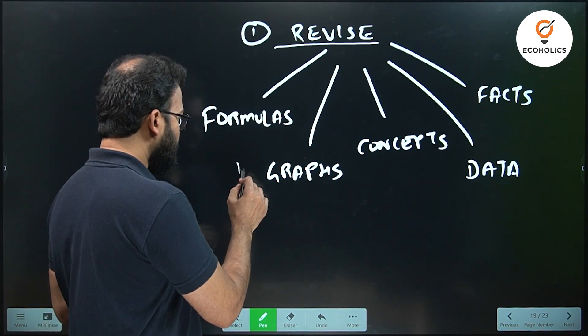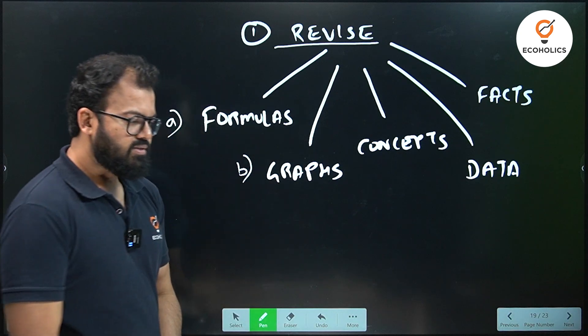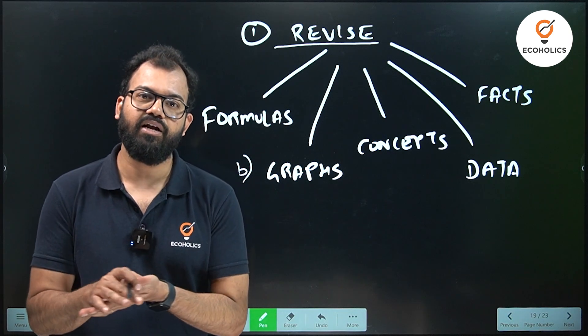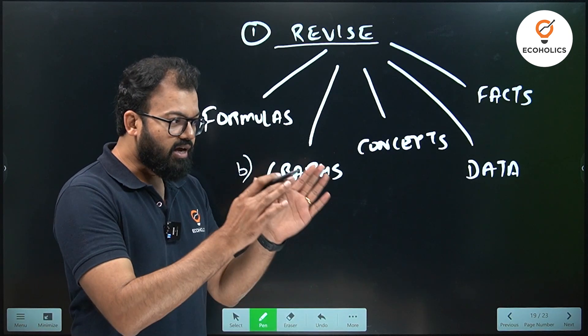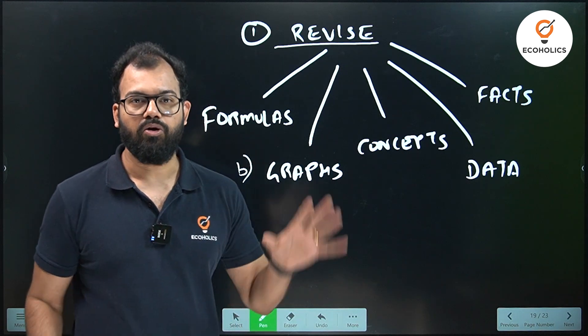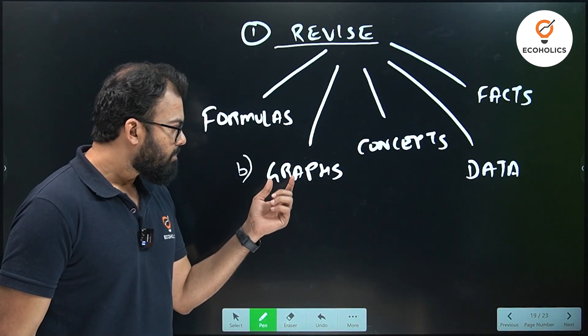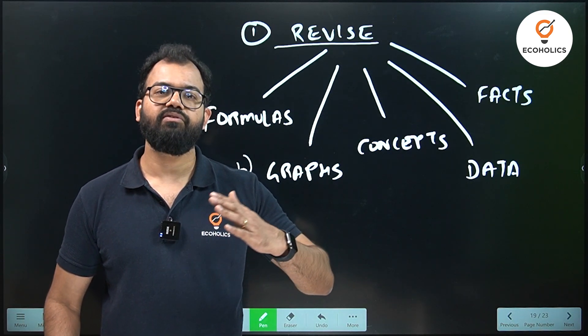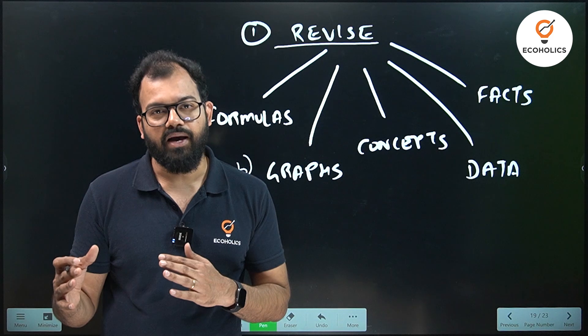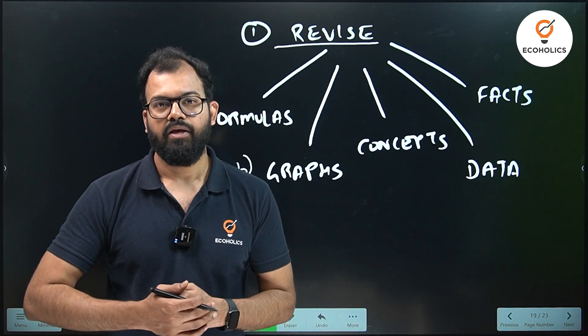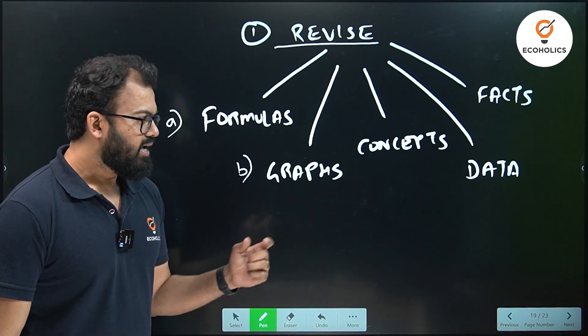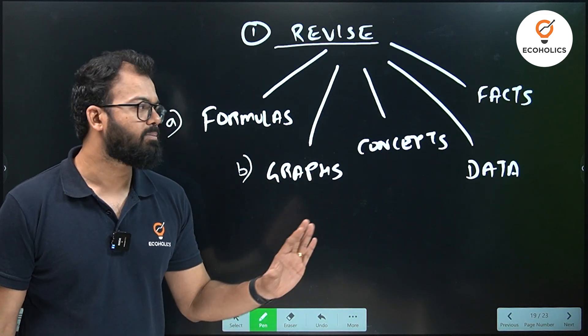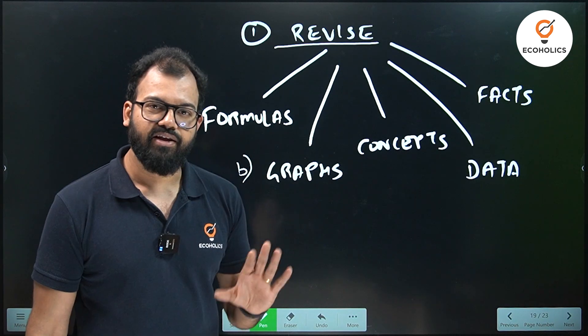Next is point B, which I call graphs. Generally, in UGC NET economics in the past years, we have not seen many questions directly from the graph, like a graph is there in the paper or on the screen. But here graphs are important because they will ask - if MC moves, what will be the impact on MR in market structure? So on the same lines, they ask questions related to graphs, although graphs are not visible on the paper. Graphs are the lifeline of economics.